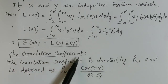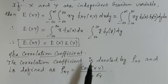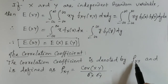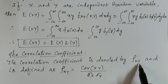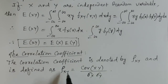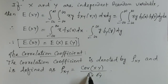Next, the correlation coefficient, denoted ρ_{XY}, is defined as Cov(X, Y) divided by the standard deviation of X times the standard deviation of Y: ρ_{XY} = Cov(X, Y) / (σ_x · σ_y).